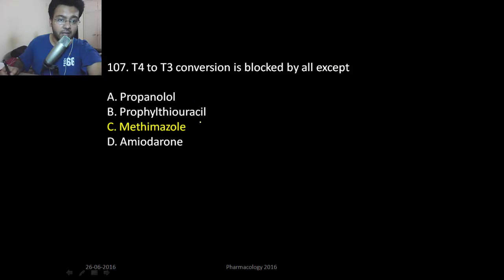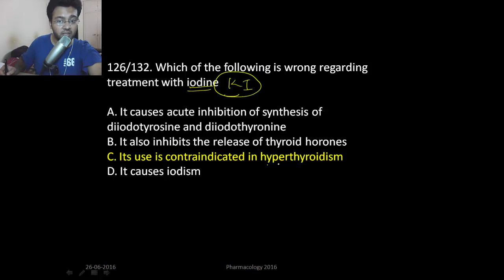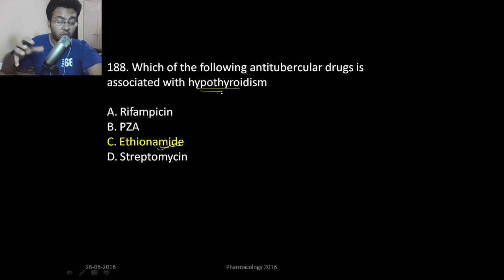Importantly, methimazole does not inhibit the conversion of T4 to T3 — T4 to T3 conversion is blocked by all the above drugs except methimazole. Regarding potassium iodide: it decreases the secretion of T3 and T4 and can be used in hyperthyroidism — it is not contraindicated. Finally, among anti-tubercular drugs, ethionamide interferes with thyroid hormone synthesis and can cause hypothyroidism.